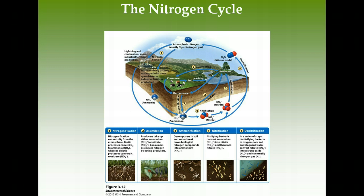Nitrogen is a limiting nutrient, so plants can't live without it. But if there's too much — a big problem with fertilizers — plants will overgrow. When fertilizers with lots of nitrate run into water, the nitrate acts as a nutrient causing algae to overgrow, cover the top of a lake, and suffocate fish and other organisms by making the water anoxic — meaning it loses oxygen.